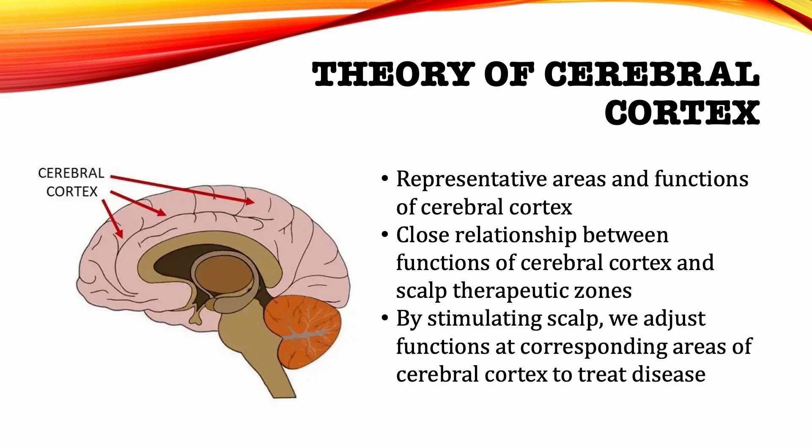Theory of Cerebral Cortex. Some scalp acupuncture systems are based on modern knowledge of the representative areas and functions of the cerebral cortex. It is believed that there is a close relationship between the functions of the cerebral cortex and the scalp therapeutic zones. By stimulating the scalp, we are able to adjust the functions of the corresponding areas of the cerebral cortex to treat disease.